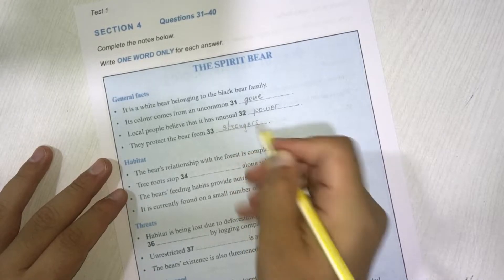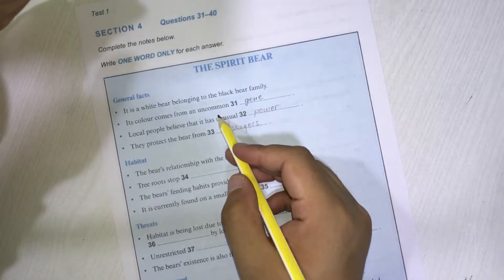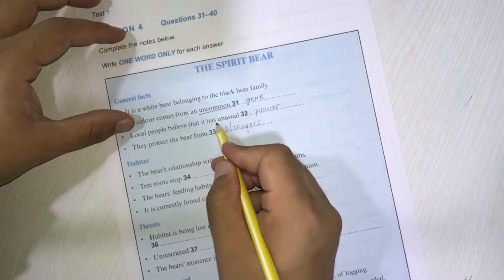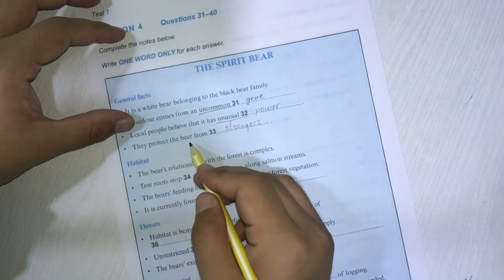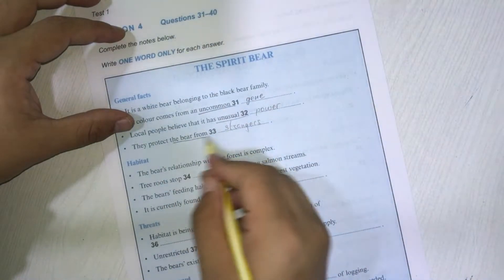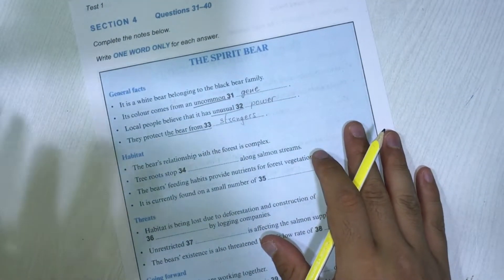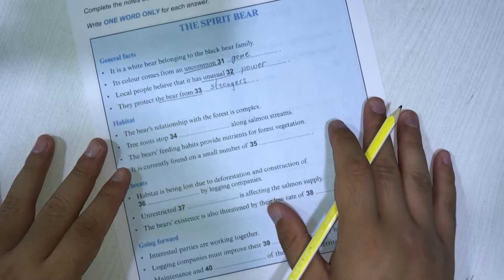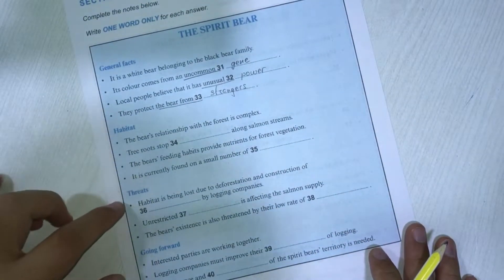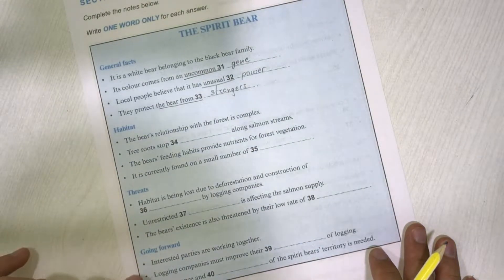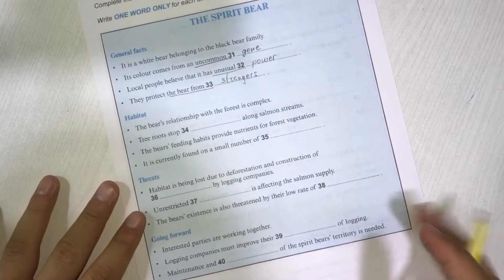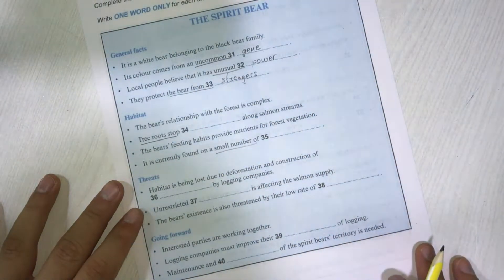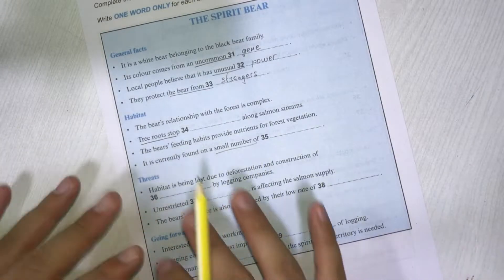The white bear's habitat is quite interesting. As you can see for every part, I'm trying to find synonyms for this. Instead of uncommon, they said unique, and unusual, they said special. Instead of protect from strangers, here I got the keywords and followed them. So when you are following instructions, please be careful and focus hard. Otherwise you may lose your focus. And now we have habitat and going forward. I'll stop after the 35th question and explain again in detail.